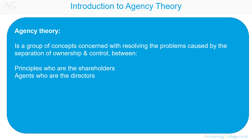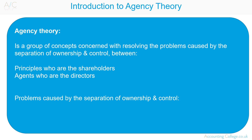Agency theory with regards to organisations is a group of concepts concerned with resolving the problems caused by the separation of ownership and control between the principals, who are the shareholders, and agents, who are the directors. Problems caused by separation of ownership and control are conflicts of interest and attitudes to risk.